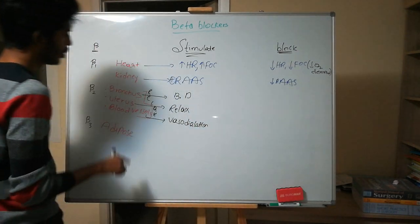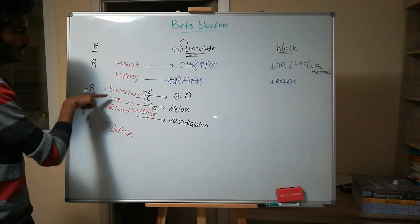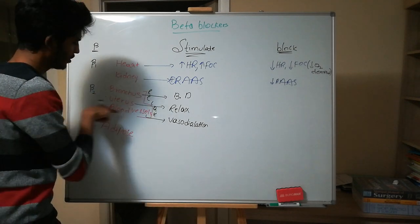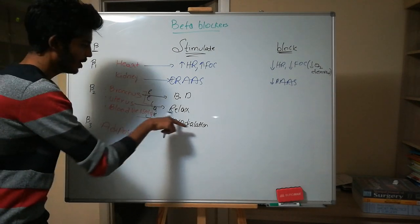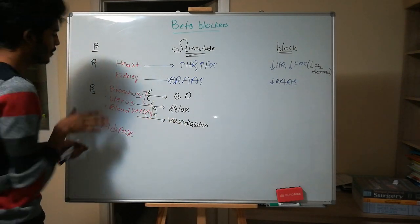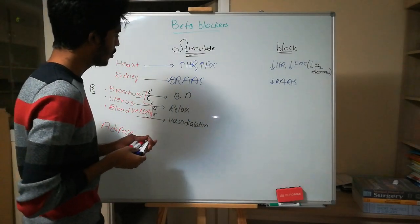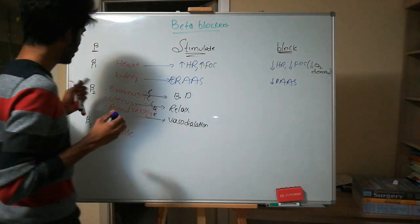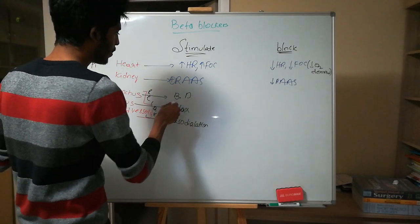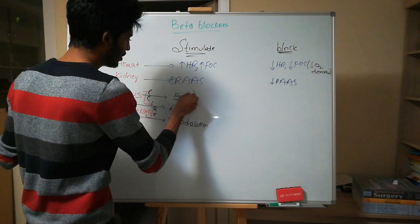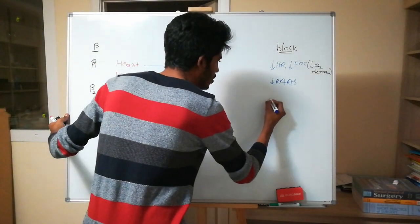So the effects of beta 2 stimulation are: bronchodilation, uterus relaxation, and blood vessel dilation. Now let's see what happens if we block the beta 2 receptor. The opposite of bronchodilation would be bronchoconstriction.